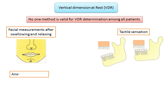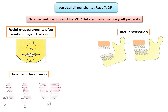Another method is based on anatomical landmarks. The distance between the pupil of the eye and the rima oris (corners of the mouth) is measured as A, and B is measured as the distance between the anterior nasal spine and the lower border of the mandible. These measurements are taken using a Willis gauge. If both distances are equal, the jaws are considered to be at rest.